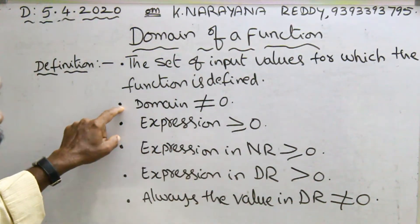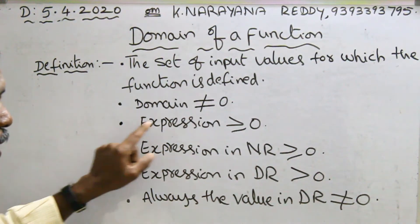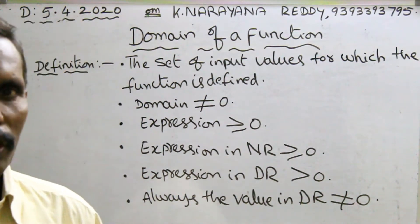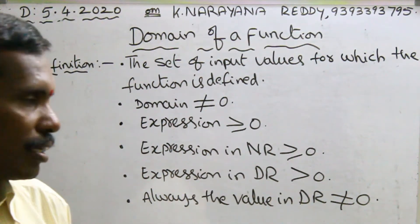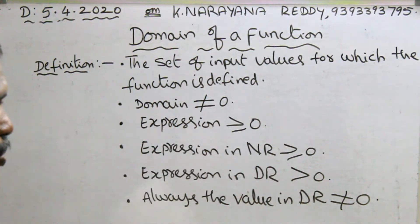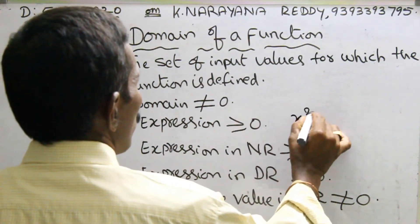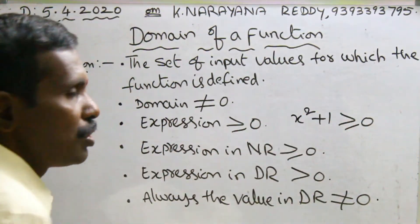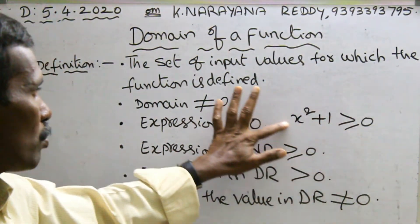Third point: expression greater than or equal to zero. Expression not equals to zero. For example, x squared plus one — that expression is greater than or equal to zero. This is suitable for domain.